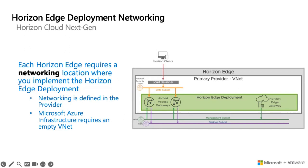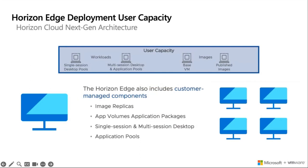There are some important things to consider when setting up your Horizon edge. You need to make sure that you have a network security group for the DMZ subnet, as well as for the management subnet and desktop subnet. In more simple terms, user capacity includes the applications, packages, desktops, and images for user workloads. When we talk about capacity, we're really talking about the virtual machines, the images they possess, the different session hosts — whether it's a single-session or multi-session desktop or an application pool.